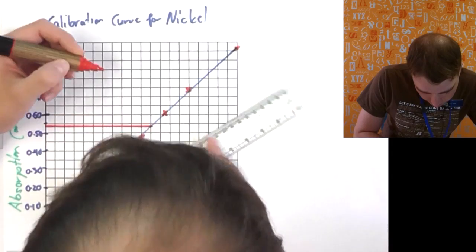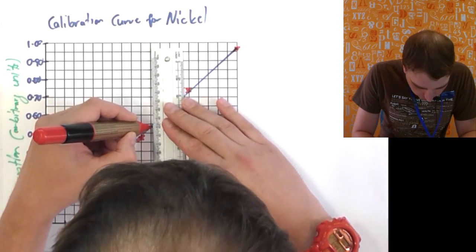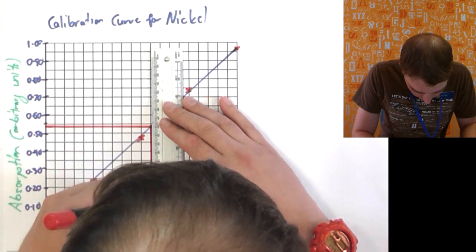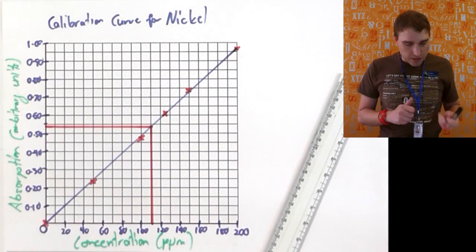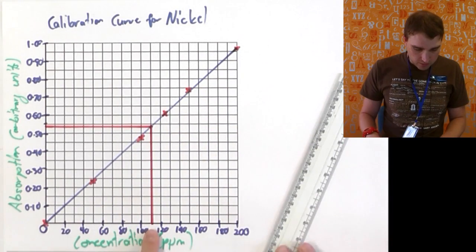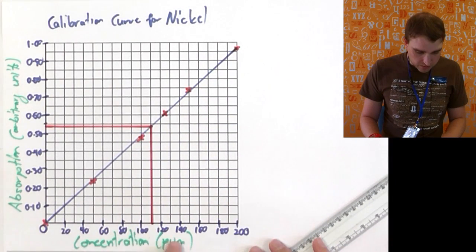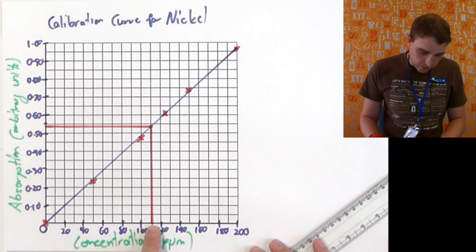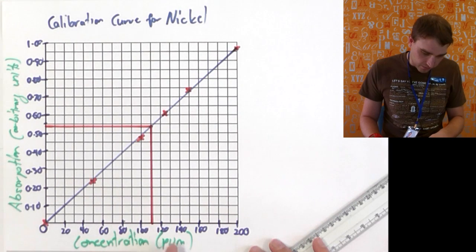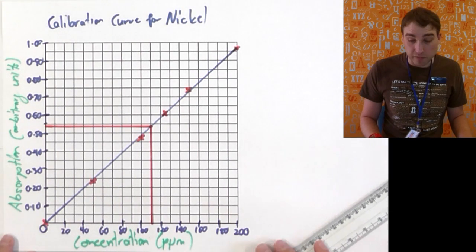Draw it across until it meets, and then I'm going to draw from where it meets and go down. Now, for my results there, if we look down the bottom here, it's going to be between 100 and 120. That's going to be 110 there, and it's just on that side of 110, so I'm going to say it's going to be 111 parts per million for the unknown.